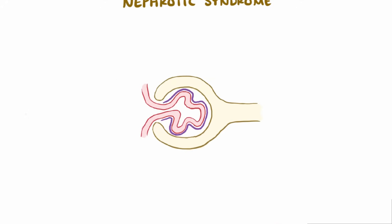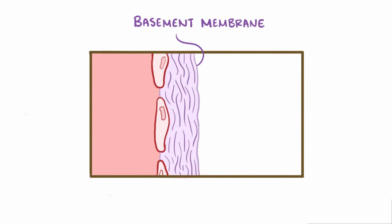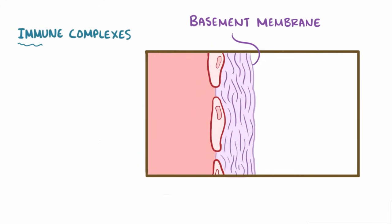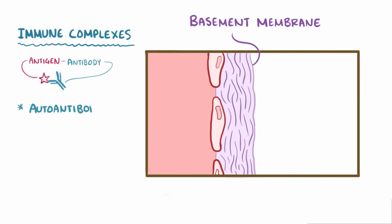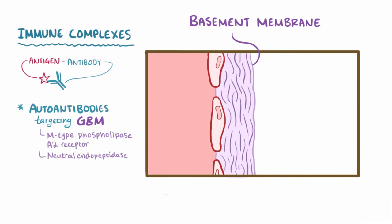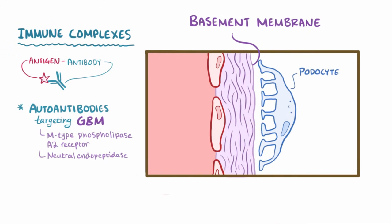So with membranous glomerulonephritis, the basement membrane becomes damaged, which causes nephrotic syndrome. How does that happen, though? Ultimately this damage is caused by immune complexes — complexes composed of an antigen with an antibody bound to it. One way these complexes can form is as a result of autoantibodies directly targeting the glomerular basement membrane. Two major antigen targets that have been identified are the M-type phospholipase A2 receptor and neutral endopeptidase, which are both expressed on the podocyte surface — the cells that line the basement membrane. And we know this because in a large proportion of cases, people with membranous glomerulonephritis have antibodies against these autoantigens in their bloodstream.